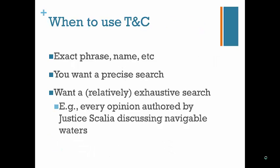Knowing when to pick which type of search can be tricky. I tend to use Terms and Connectors more than natural language searches, especially when I have an exact name or phrase I am looking for. This commonly comes up with legal terms of art such as fruit of the poisonous tree, collateral estoppel, or intentional infliction of emotional distress. I also use Terms and Connectors when I want a precise search — that is, when I want to control exactly what results I get.